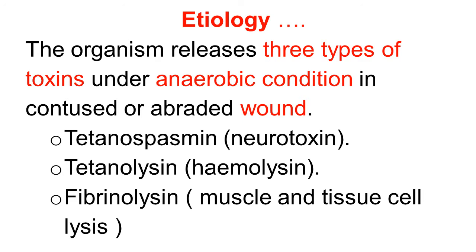Continuing with etiology — on conversion to the vegetative form, the Clostridium tetani organism produces three types of toxins under anaerobic conditions in the necrotic tissue. The three types of toxins are: tetanospasmin, which is a neurotoxin; tetanolysin, which is a hemolysin; and fibrinolysin, which causes muscle and tissue cell lysis. Of these three toxins, the important one for the production of disease is the neurotoxin tetanospasmin. Remember, tetanospasmin or neurotoxin is important for the development of tetanus.